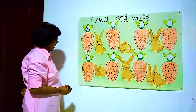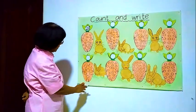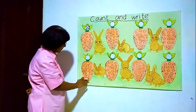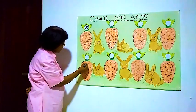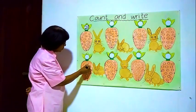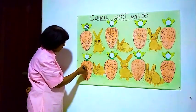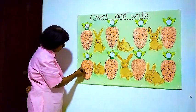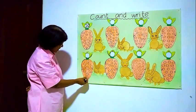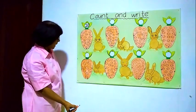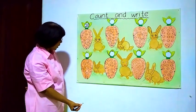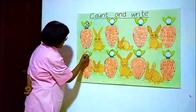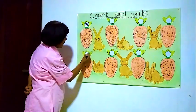Now we will go to the next one down here. We will see how many balls are inside this carrot. We will start from here. 1, 2, 3, 4, 5, 6, 7, 8, 9, 10. There are only 10 balls inside this carrot. We write 1, 0 — ten.